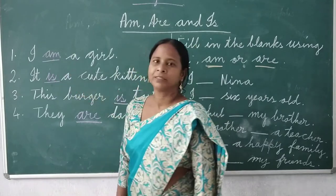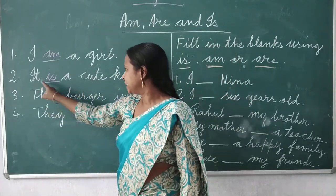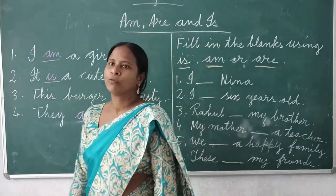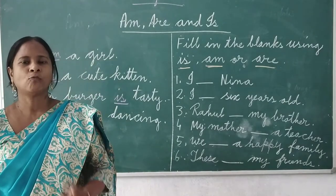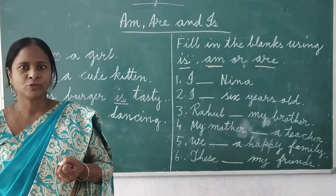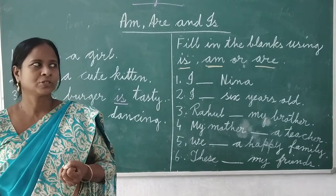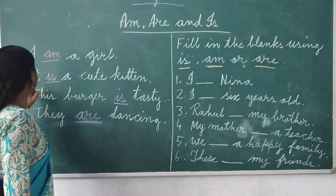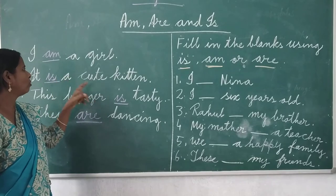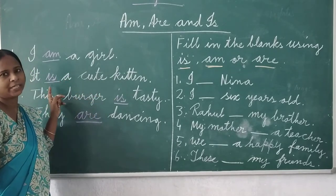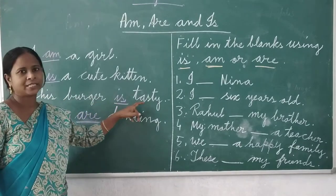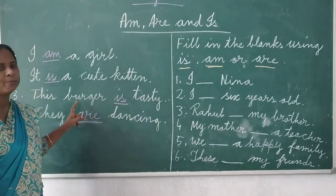I am a girl. Next: he is a cute kitten. 'Is' is used when there is only one person, animal, or thing. So here, he is a cute kitten — talking about only one kitten, so we use 'is'. Same thing: this burger is tasty — only one burger, so we use 'is' here.